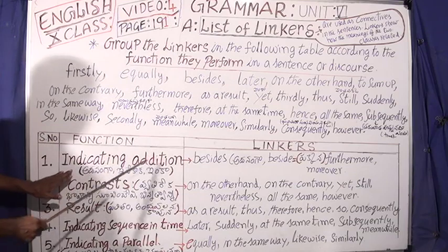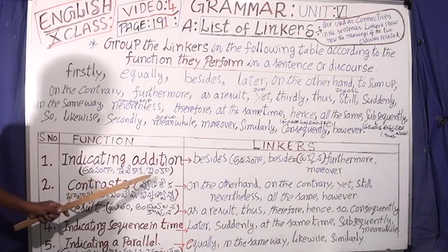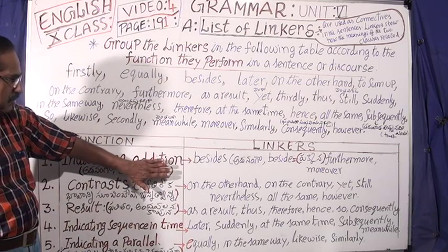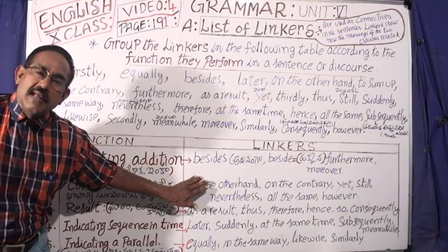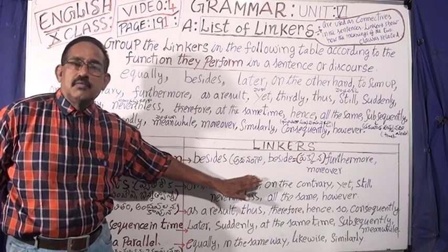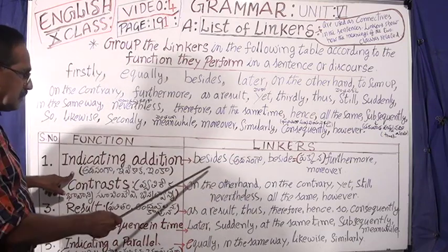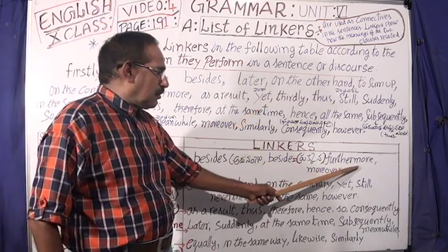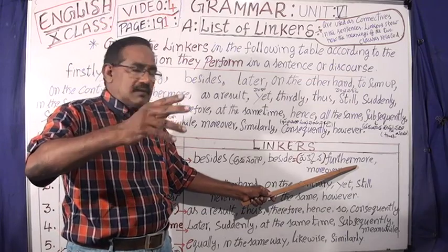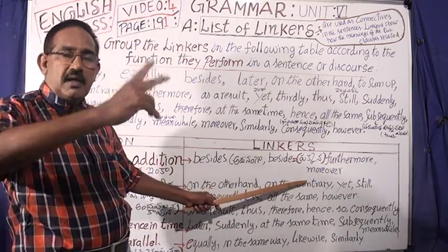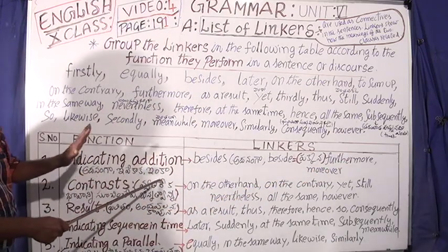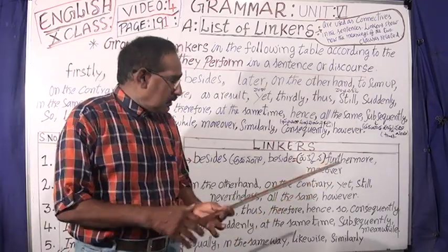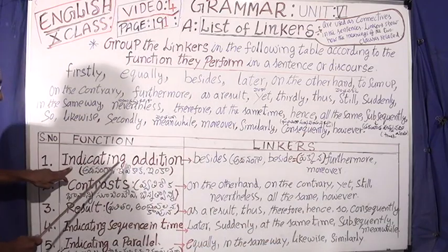Number 1 is Indicating Addition. We are indicating that besides means Adhananga, besides Adhananga is a meaning. Furthermore, furthermore, moreover. This is what we call Adhananga — besides, furthermore, moreover.